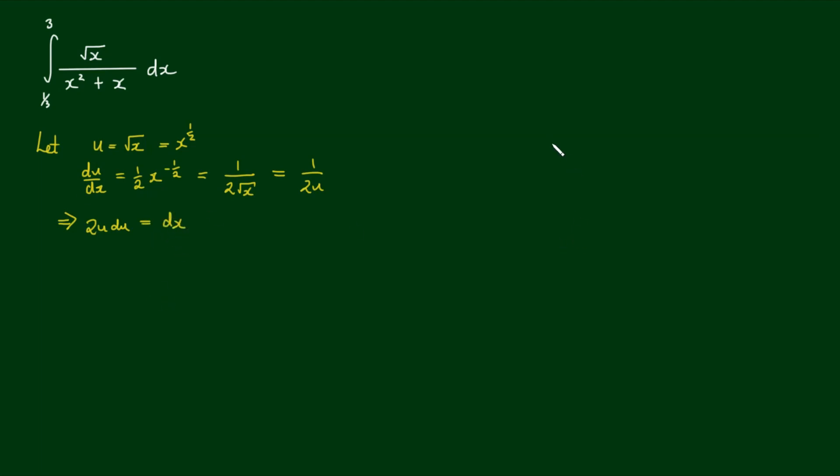Now, on the other hand, if u is equal to the square root of x, this means that x is equal to u squared. So we square both sides. And of course, then x squared, if we square both sides again, is equal to u to the fourth power. So we can make all the substitutions now.